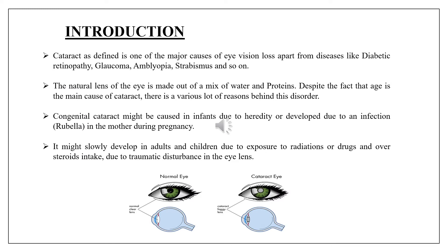Cataract is defined as one of the major causes of eye vision loss, apart from diseases like diabetic retinopathy, glaucoma, and others. The natural lens of the eye is made of a mix of water and proteins. The lens lacks nerves, veins, or connective tissue. Sometimes the proteins become increasingly insoluble as we age, and the lens dynamically loses its clarity and focusing capacity. This restricts the amount of light passing through the lens to the retina, making vision hazy and blurred. Although age is the main cause of cataract, there are various other reasons.